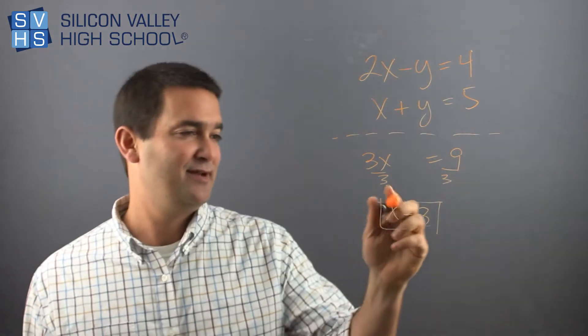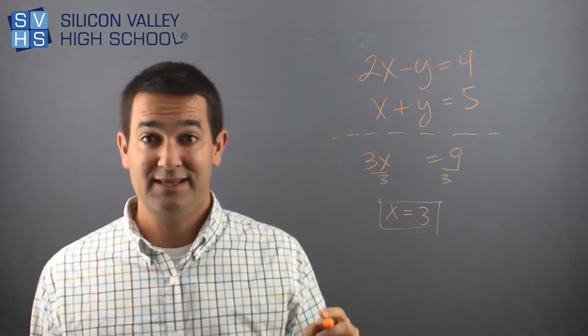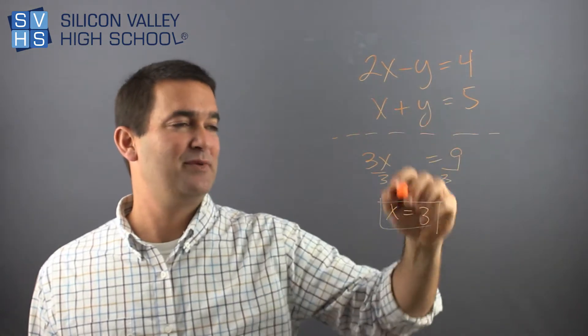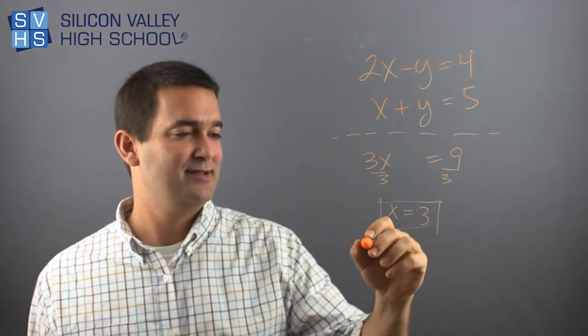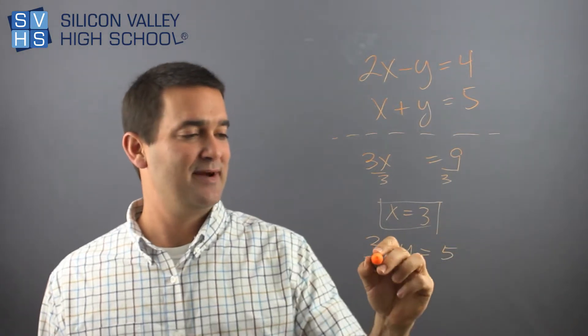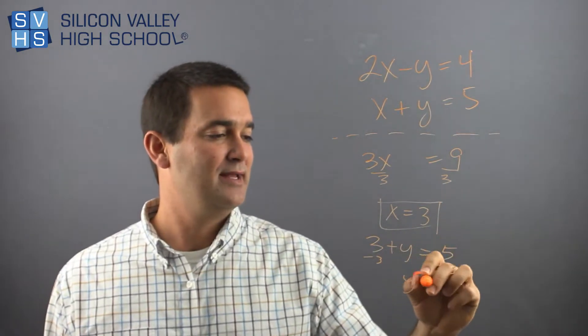And then remember, I'm only halfway done. I have to put 3 back into either of the above. Totally does not matter at all, this one or this one. But I'll put it in the easiest one. Looks like maybe that one. So I have 3 plus Y equals 5, and then minus 3, minus 3, Y equals 2.